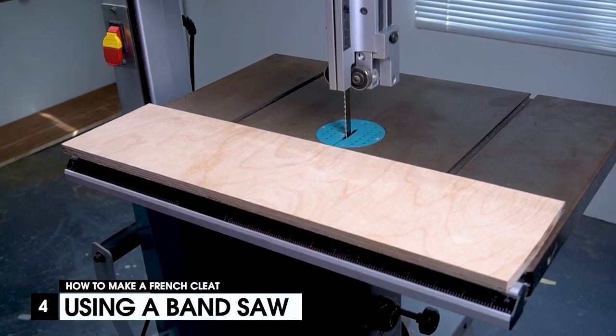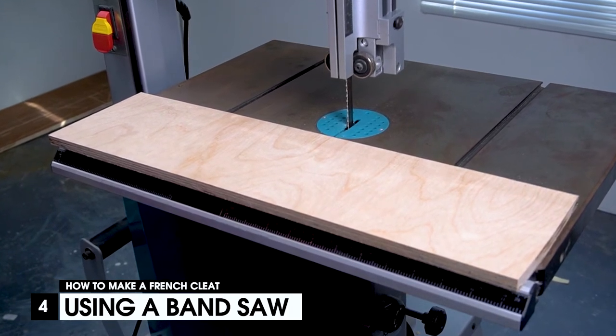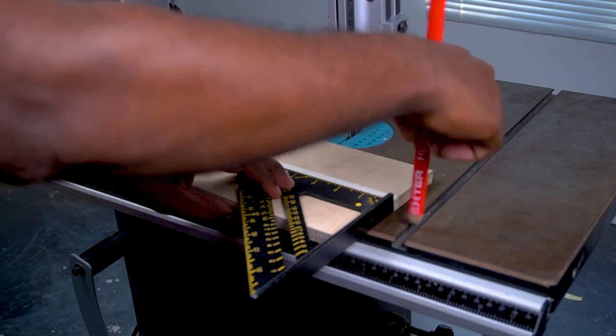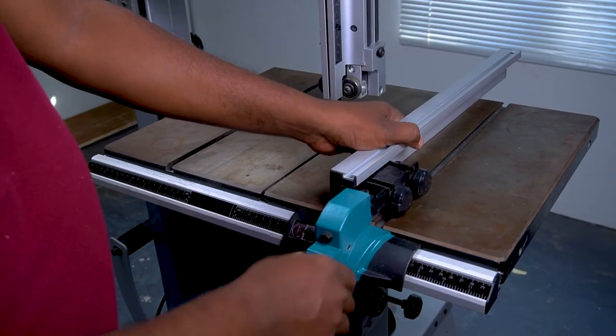The fourth method is by using a band saw. Begin by placing the wood on the bed of the band saw. Measure and mark the cut line onto the plywood using a speed square and pencil.